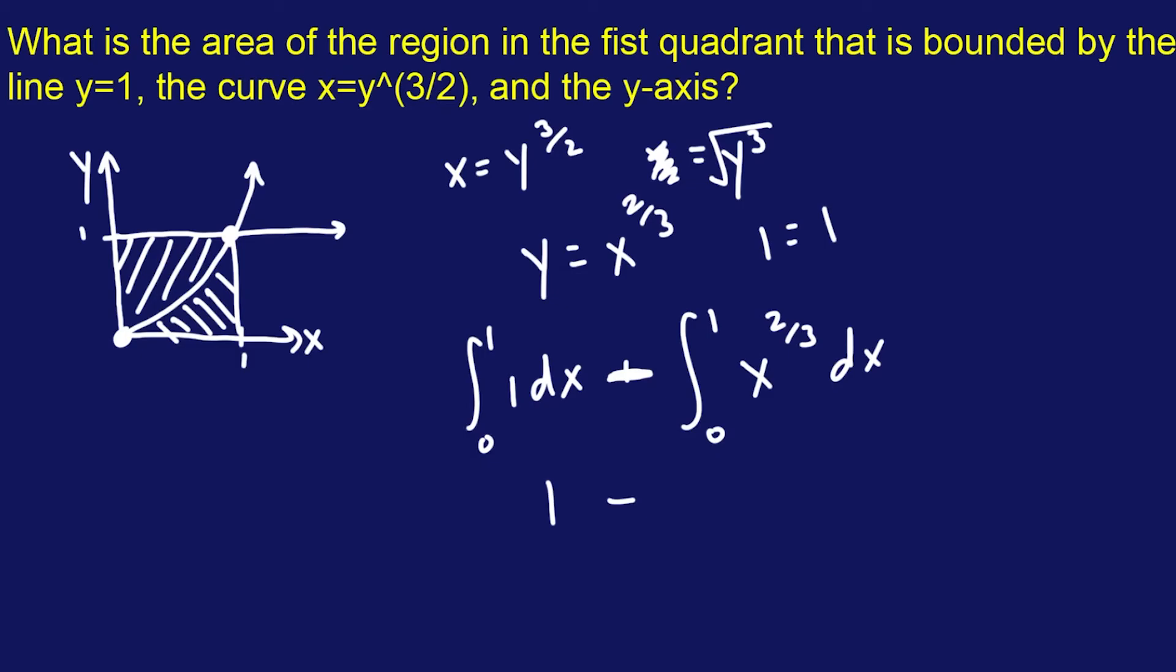And we solve that one real quick. So one minus. We're going to do the integral rule, which is add one, divide by the new exponent. So we're going to add one to that, it's going to be five-thirds, divide by that, that's going to be three-fifths. So then you do x to the five-thirds. This is the value between zero to one. That's obviously one minus three-fifths. Come on. So we've got five over five. It's going to equal the area of this curve right here is going to equal two-fifths.